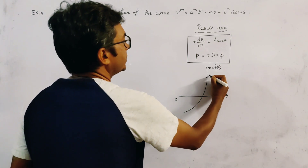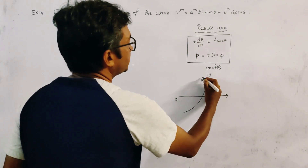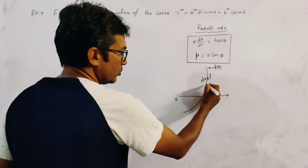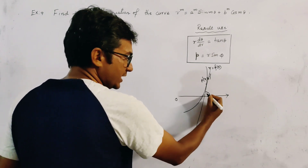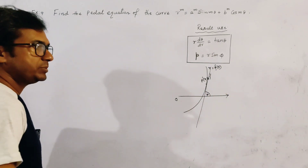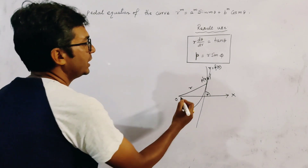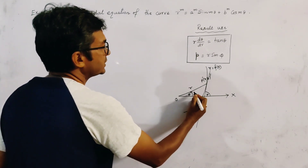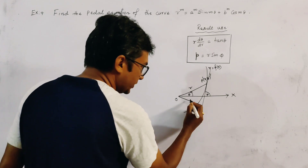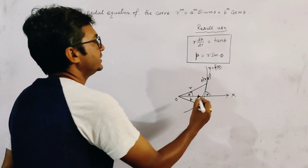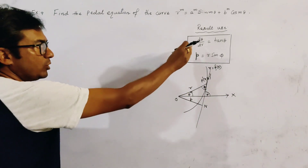Let P be any point; the coordinate of P is (r, θ). We draw a tangent at P, and this tangent makes angle ψ with the positive polar axis OX. This is the radius vector denoted by r, and θ is the vectorial angle. We draw a perpendicular on the tangent from the pole — this perpendicular length is small p — and the angle between the tangent and the radius vector is known as φ.